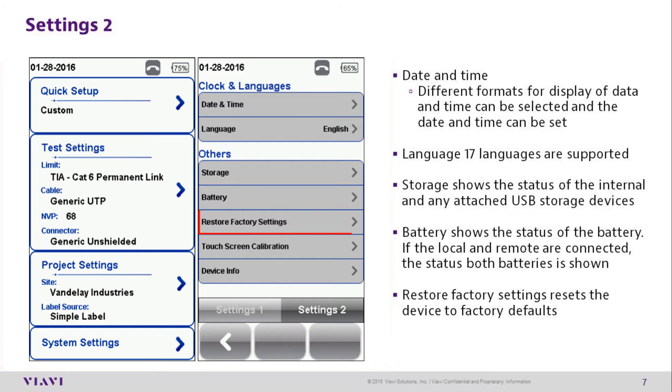Tapping on Restore Factory Defaults will prompt you to restore the unit to factory defaults. This will erase all of your settings.